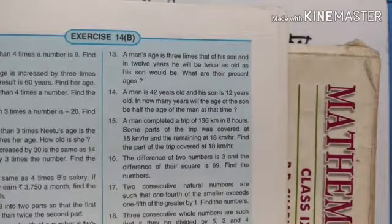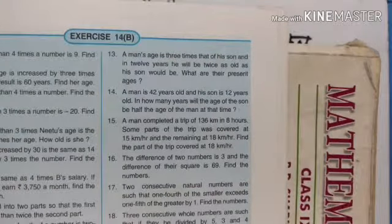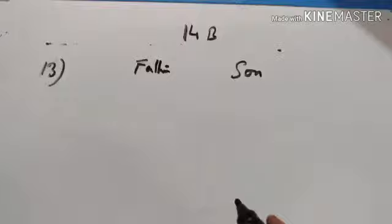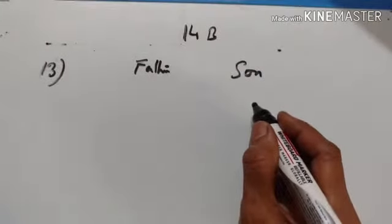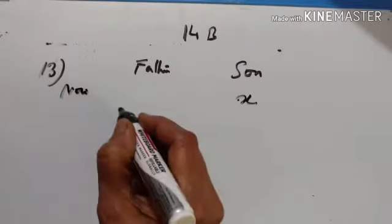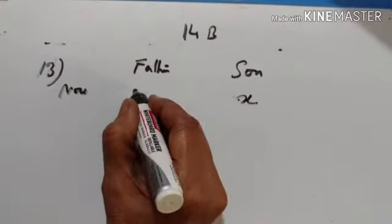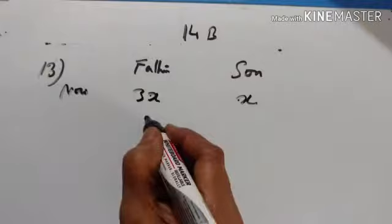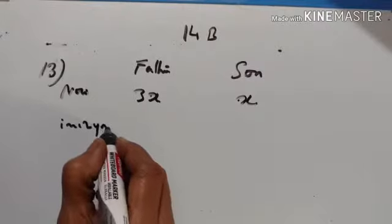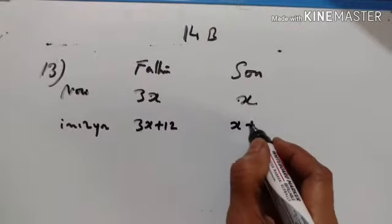13th problem: a man's age is three times that of his son, and in 12 years he will be twice as old as his son would be. What are their present ages? Let the age of the son be x. A man's age is three times that of his son, so the man's age is 3x. In 12 years, the man will be 3x plus 12 and the son will be x plus 12.